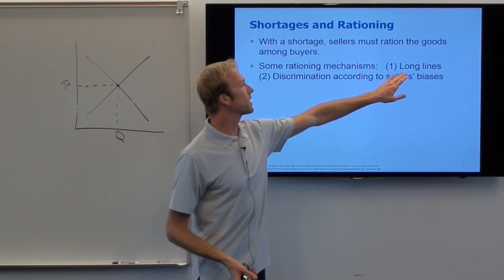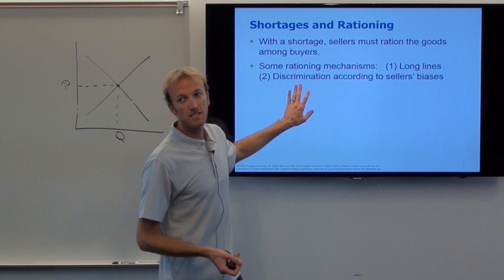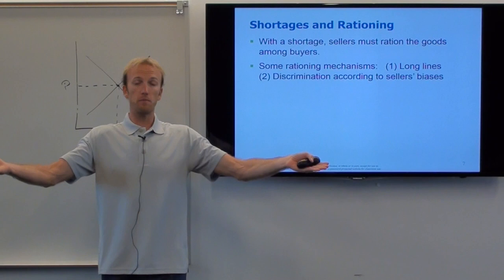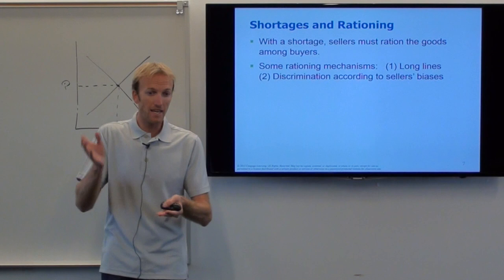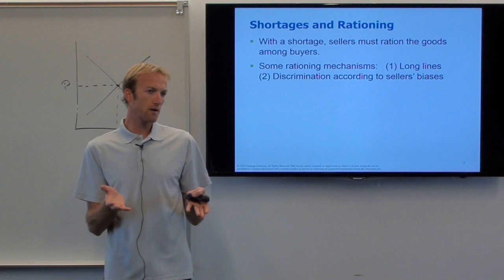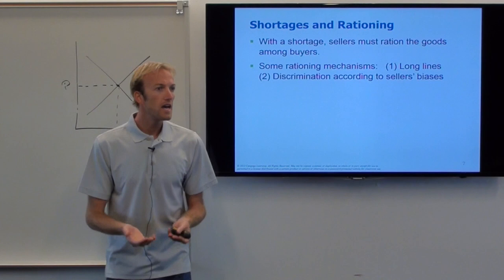Does that really happen in the apartment world? Not really — there aren't actual lines. Unfortunately, a very common rationing mechanism is discrimination according to what the seller wants. As the seller, with 150 people wanting your apartment, you can pick and choose. Since you can't charge the full $800 — only $500 — you can discriminate. Maybe you only sell to people of your own race, your own gender, your own religion, or people with no pets. There are all kinds of discrimination that happen.